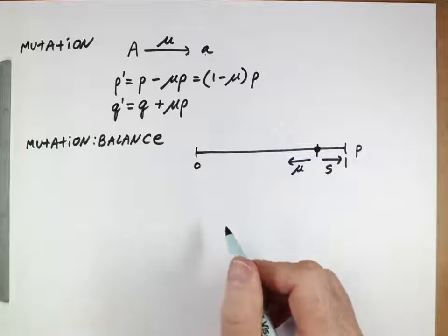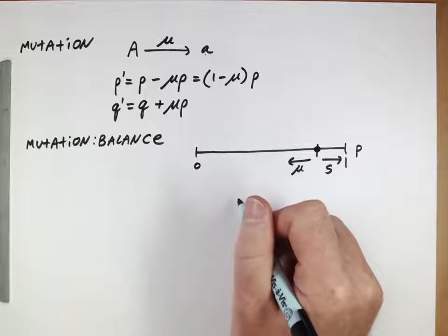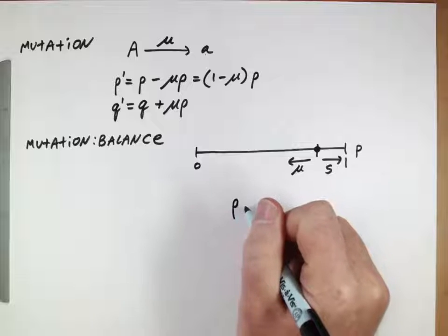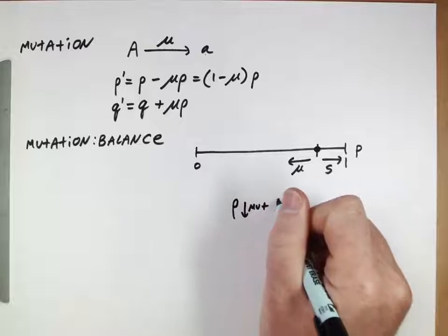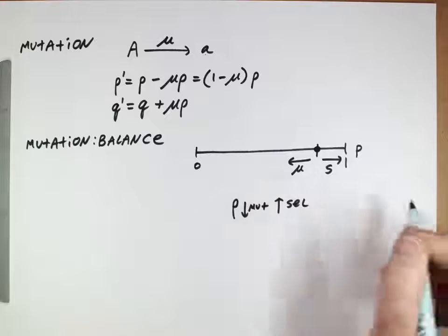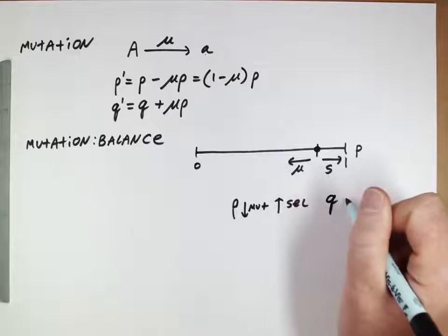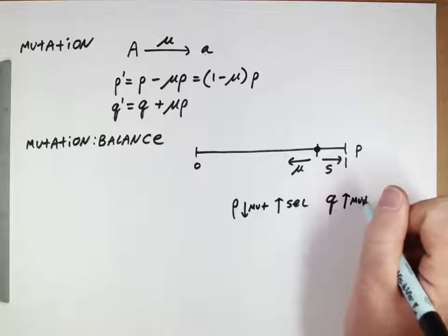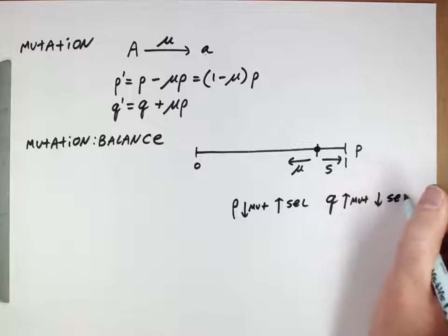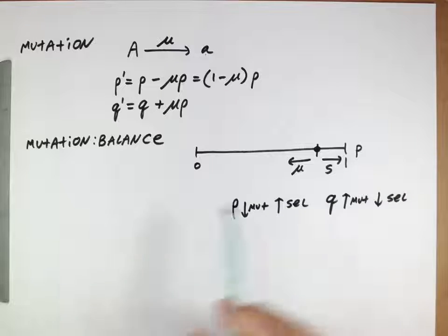So we're thinking about some sort of situation in which the value of p is being reduced by mutation but increased by selection. Similarly, the value of q is being increased by mutation and reduced by selection, and then there's some sort of equilibrium that will be achieved here. And that's one of the other reasons we looked at equilibrium when we talked about selection in the previous example.